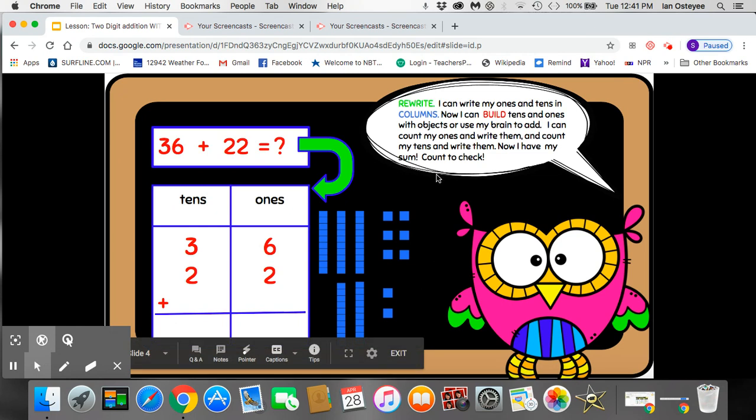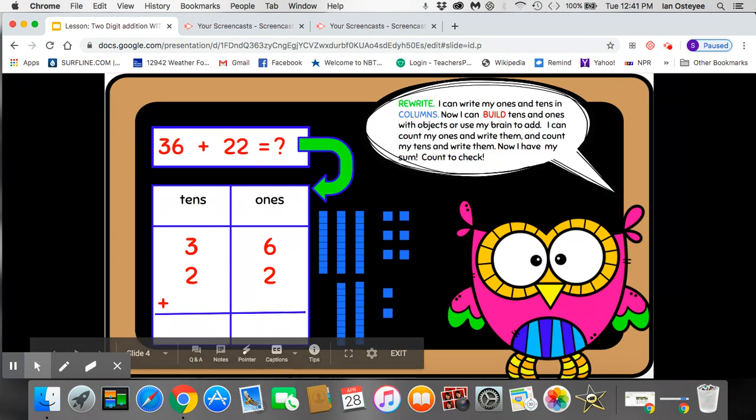Okay guys, let's rewrite. I can write my ones and tens in columns. Now I can build my tens and ones with objects or use my brain to add. So I have taken my two digit addition sentence, 36 plus 22,